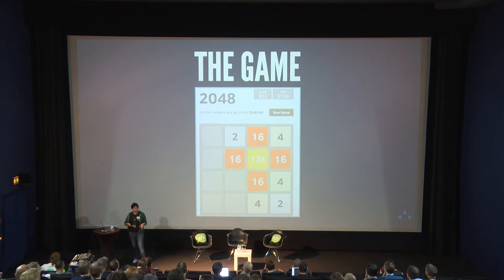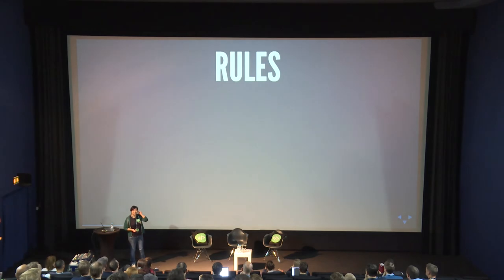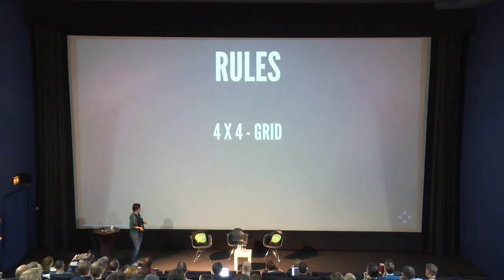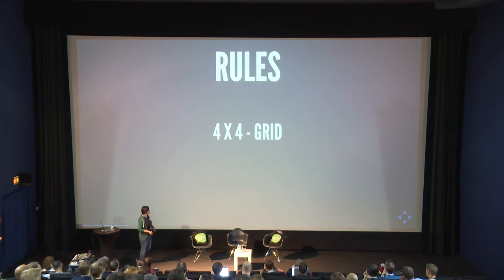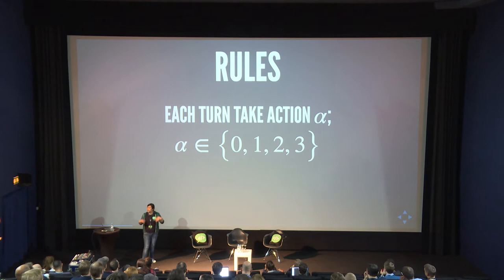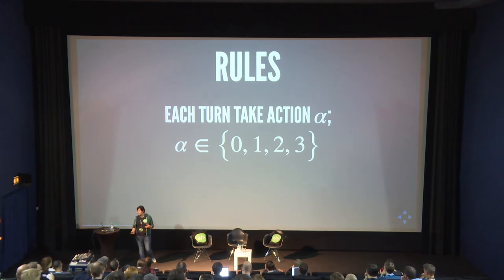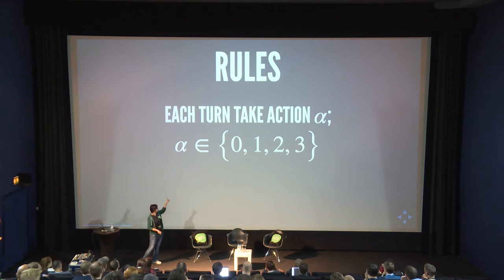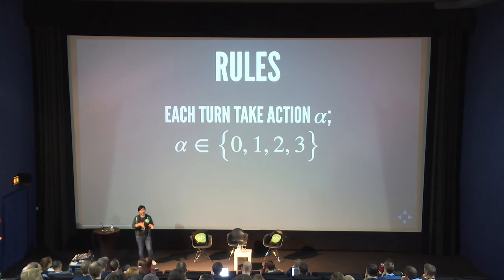Let's go over the rules so we're all on the same page. We play on a 4x4 grid. Each turn we take an action called alpha, which is 0, 1, 2, or 3 — it represents the four directions we can swipe: up, down, left, and right.